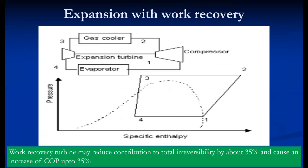The second modification: instead of an expansion valve, an expander is used — similar to the expander used in air refrigeration systems. When we use an expander, it is essentially coupled to the compressor, which should be a centrifugal or axial flow compressor. So the compressor and turbine are coupled to each other. Starting from point one, one to two is the normal compression process, two to three is gas cooling, and three to four is isentropic expansion in the expander device. The expander generates some power that is given to the compressor, so additional work is recovered. That is why it is called expansion with work recovery.